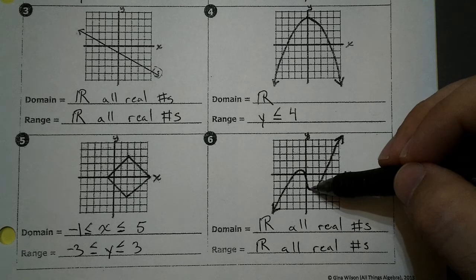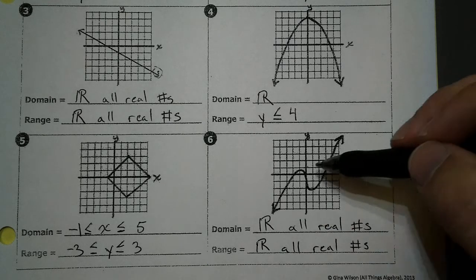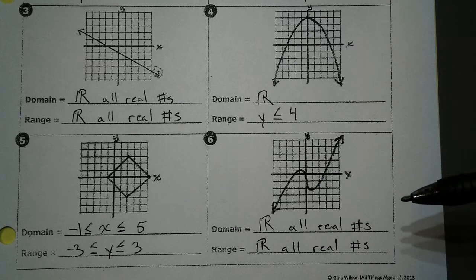The values look like they stop right there, but we still have them going down there and up there. As long as it counts one, and it keeps going, and there's not a break, it's going to be all real numbers.